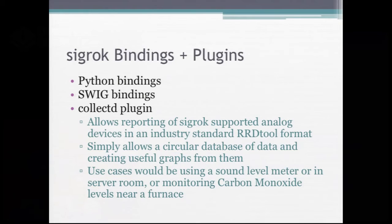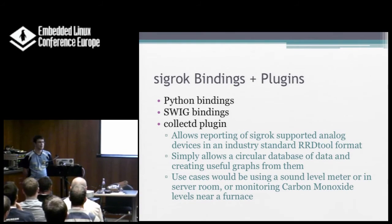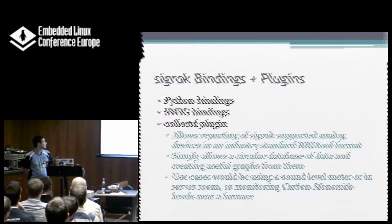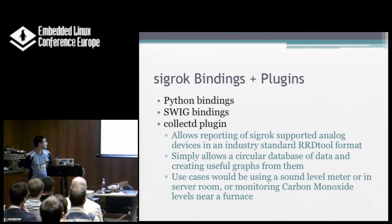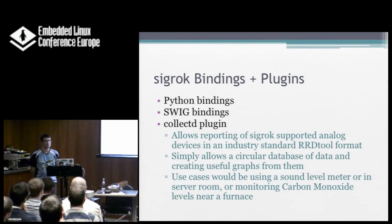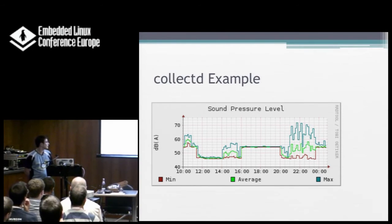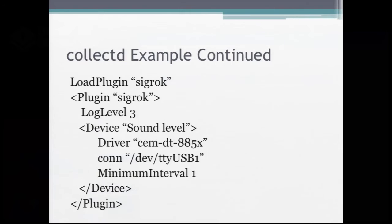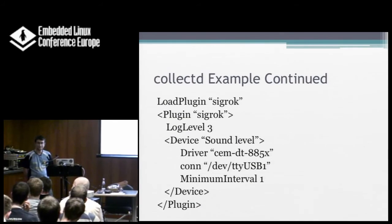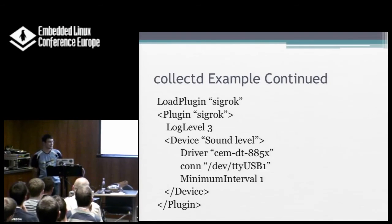We have Python bindings — that's pretty self-explanatory. SWIG means you can write for any scripting language you want. The CollectD plugin is basically graphing — it's a circular database that updates and will show you a graph over time. Use cases would be like sound level meters or carbon monoxide monitoring near a furnace. Here's what one of the CollectD configs would look like: you have a plugin, you pick the driver, the connection is serial over USB, and it updates once a second.